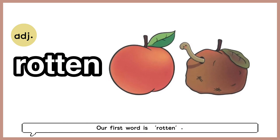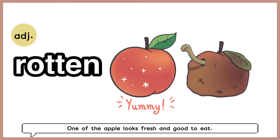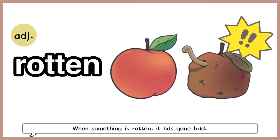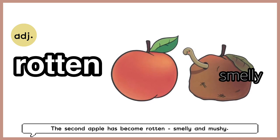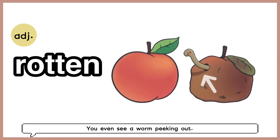Our first word is rotten. We see two apples in the picture. One of the apples looks fresh and good to eat, whereas the other one looks rotten. When something is rotten, it has gone bad. The second apple has become rotten, smelly and mushy. You can even see a worm peeking out.